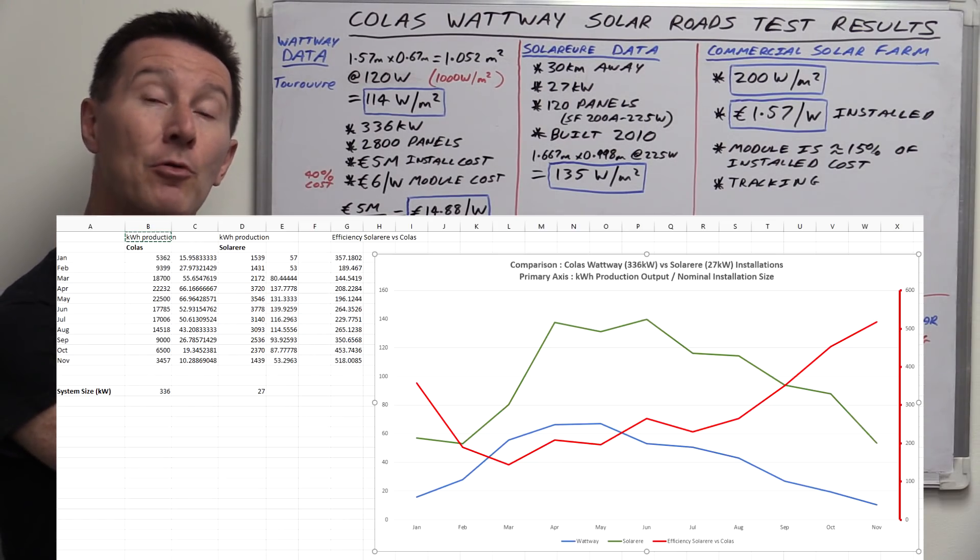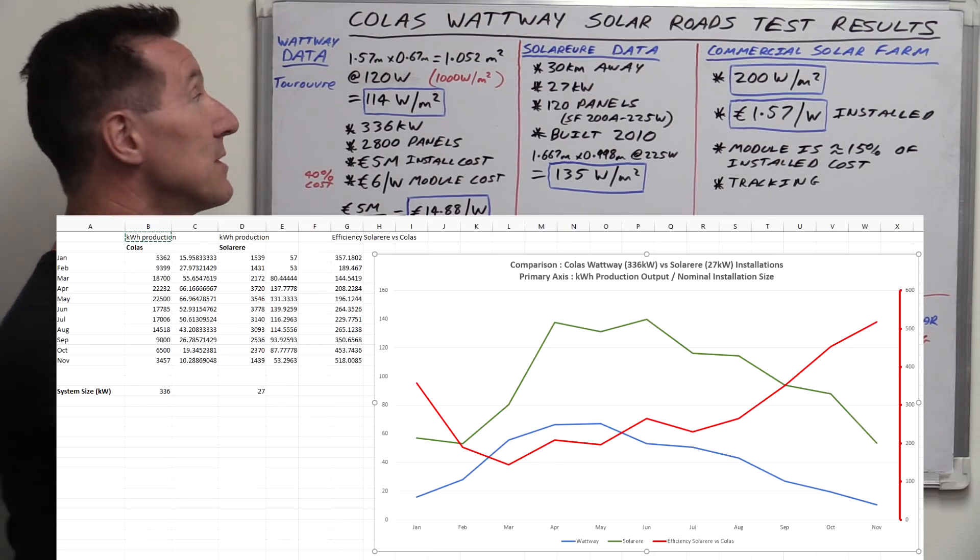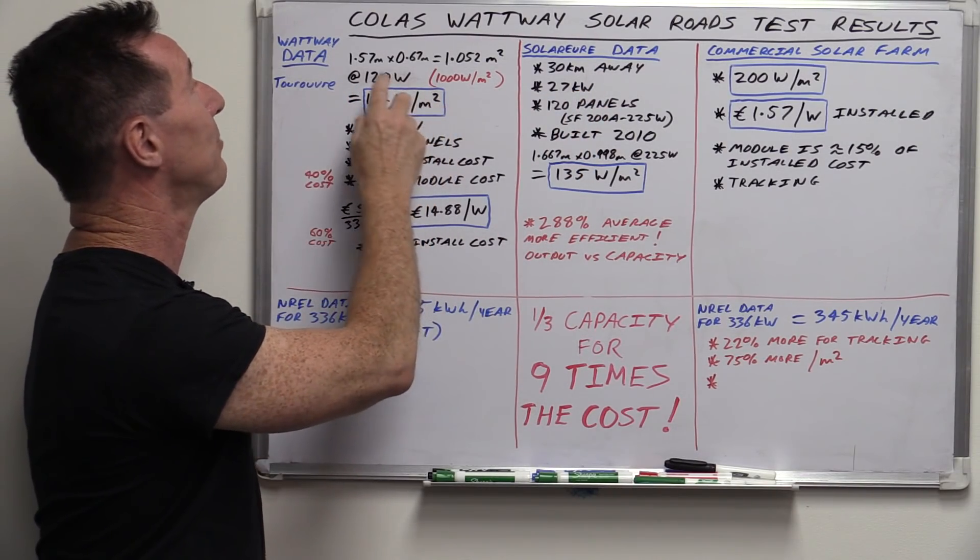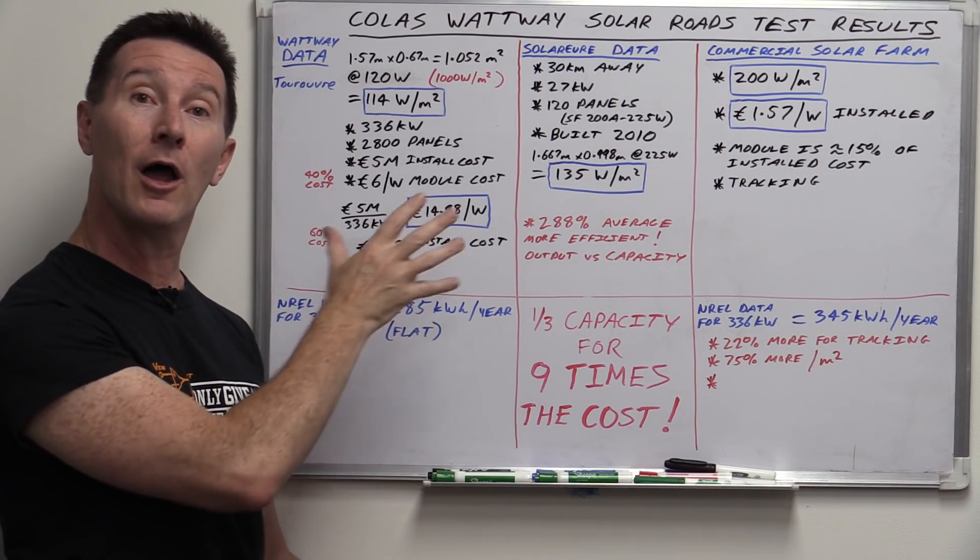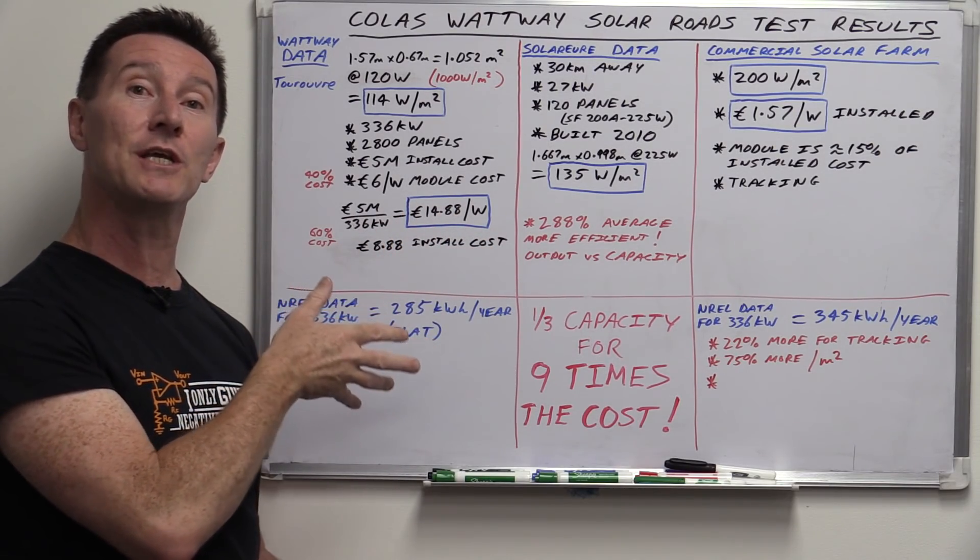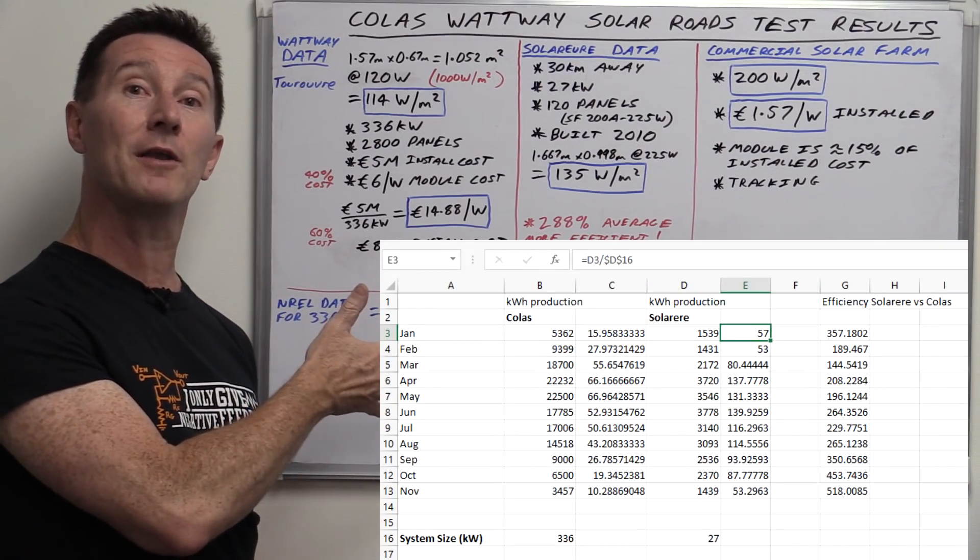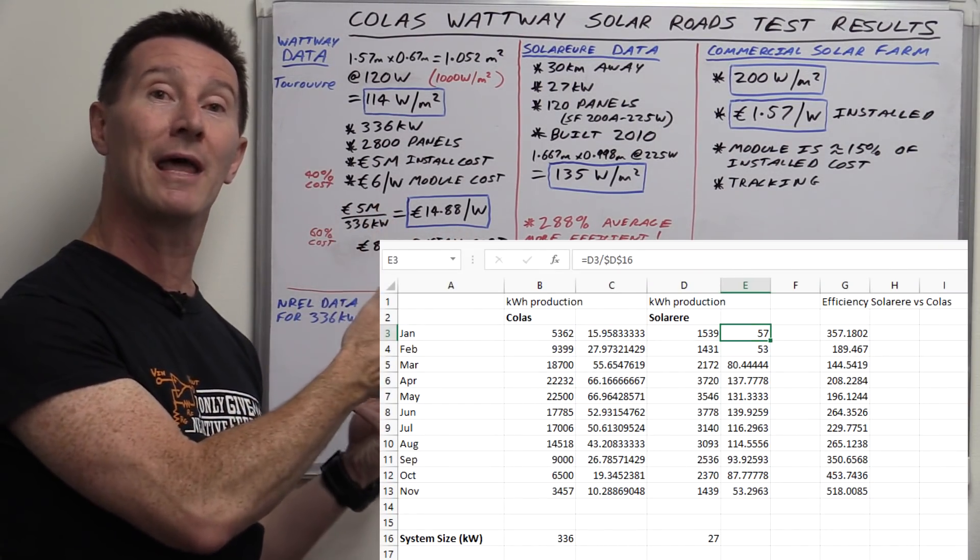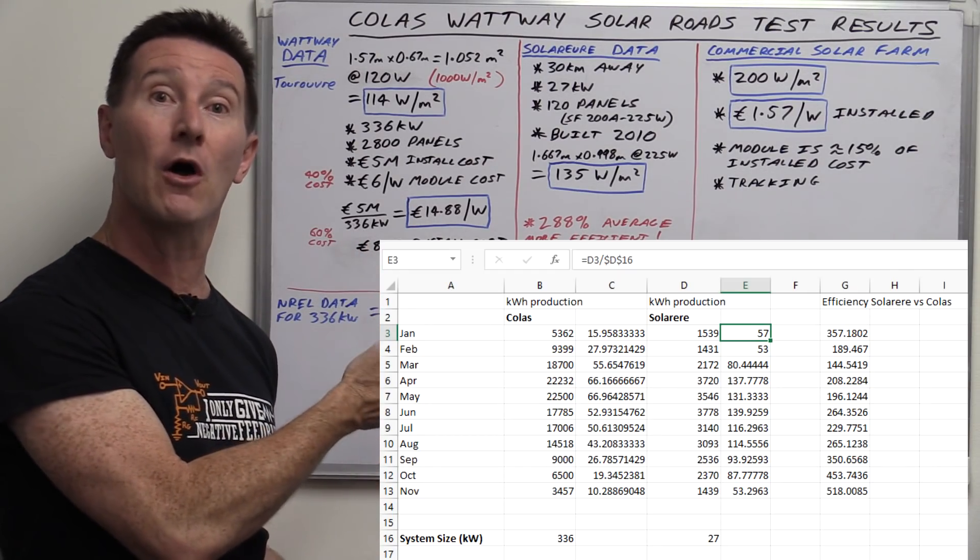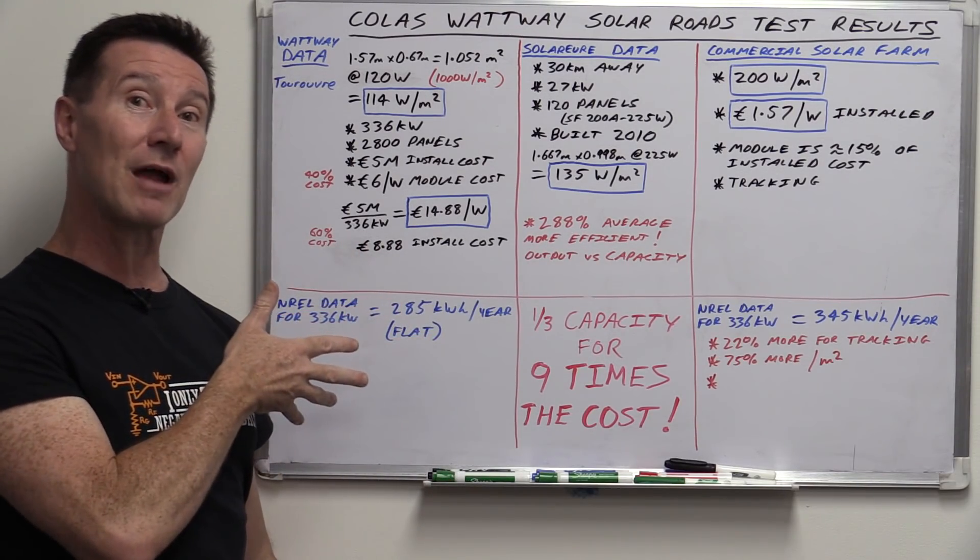So what I've done is actually got a spreadsheet of the test results from January through to November, or the production output results for these two systems. Even though they are greatly by an order of magnitude different in size here, it doesn't matter. I'm accounting for that in the spreadsheet. So it's basically the production output divided by the nominal system size. So that's a nominal output per unit size, so to speak.